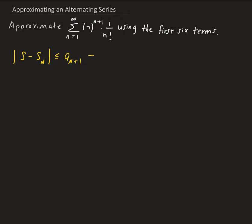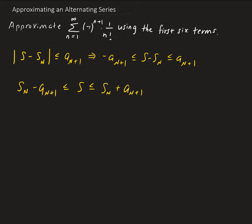This can be expanded out algebraically. This is equivalent to: minus the nth plus one term, less than or equal to s minus s_n, less than or equal to the nth plus one term. From here, we can isolate s by adding s_n on both sides, giving us s_n minus the nth plus one term, less than or equal to s, less than or equal to s_n plus the nth plus one term. We have bounds on our sum.